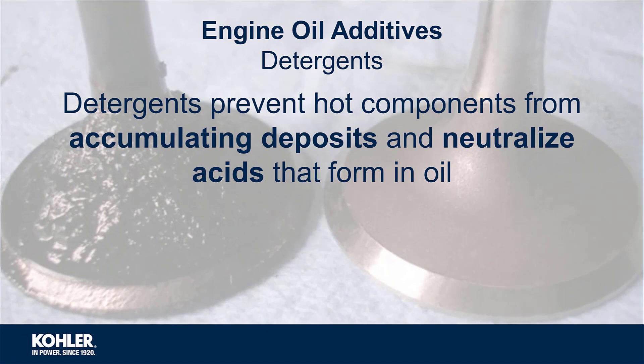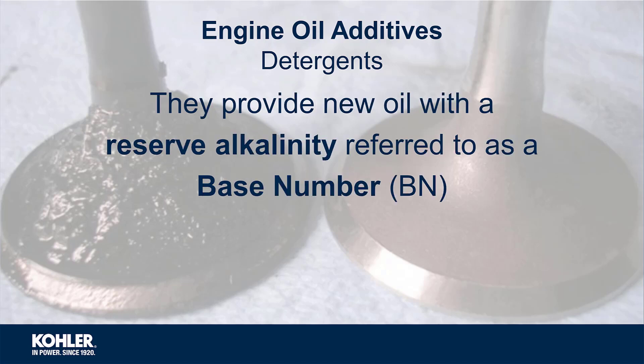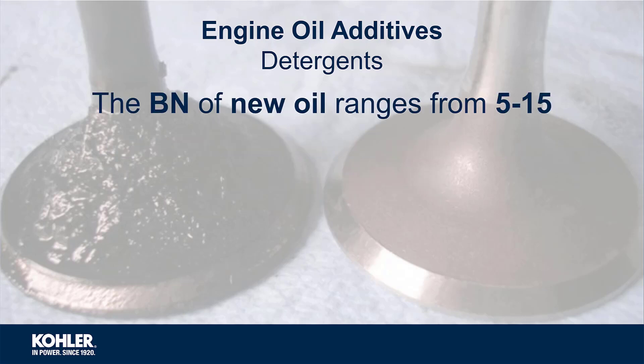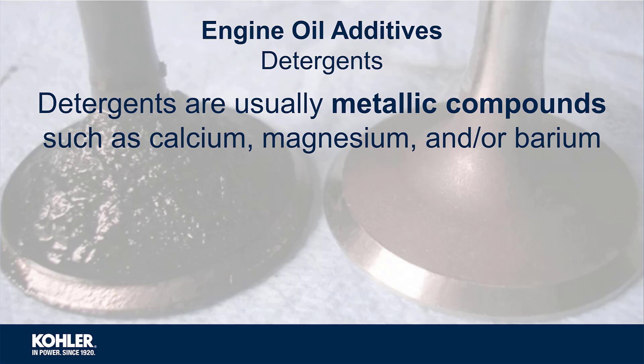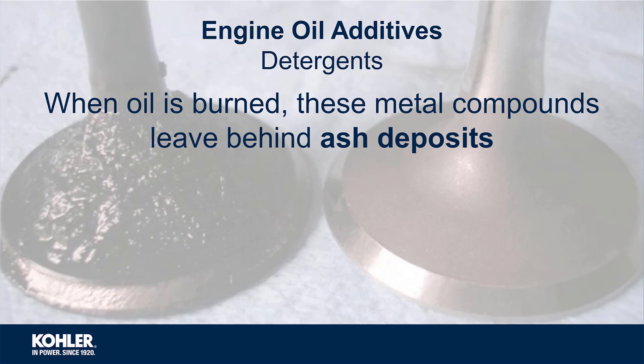Engine oil detergents prevent hot engine components from accumulating deposits and neutralize acids that form in oil. They provide new oil with a reserve alkalinity referred to as a base number. The base number of new oil ranges from 5 to 15, and a base number below 3 indicates an oil change is necessary. Detergents are usually made of metallic compounds such as calcium, magnesium, or barium. When oil is burned, these metallic compounds leave behind ash deposits.